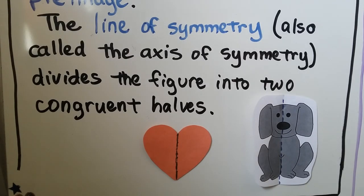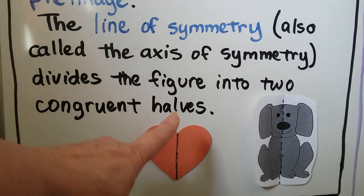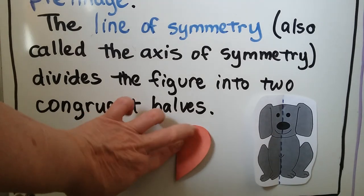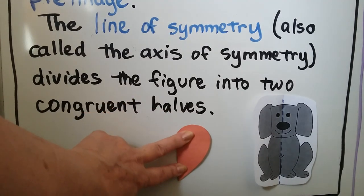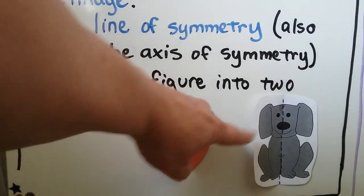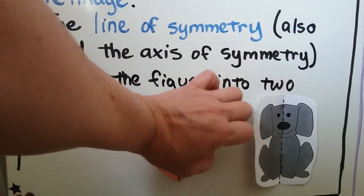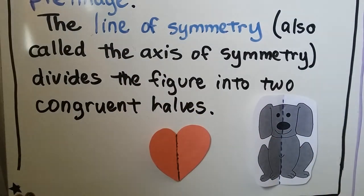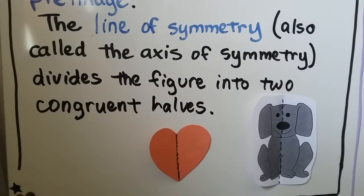The line of symmetry, also called the axis of symmetry, divides the figure into two congruent halves. So we have this line of symmetry on our heart and I can fold it and make it into two congruent halves — it perfectly coincides with itself. We can also do the same thing with the little picture of the dog. I could fold it along this line of symmetry and it would coincide with itself.